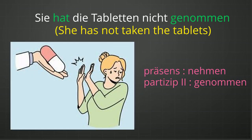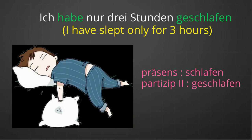"Er hat das Tablet nicht genommen." Here, genommen is the Partizip II form of the verb nehmen, which is a Haben verb. The conjugated form of Haben, which is hat, is at second position, and genommen is at the end of the sentence. "Ich habe nur drei Stunden geschlafen." Geschlafen is the Partizip II form of schlafen. Geschlafen is not showing any position change or state change, so we use it with Haben. The conjugated form of Haben is at second position and geschlafen is at the end of the sentence.